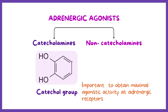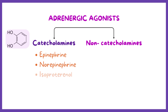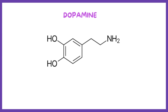Examples of catecholamines include epinephrine, norepinephrine, isoproterenol, and dopamine. Dopamine contains one catechol moiety, one ethylene linkage, and one amino terminal.